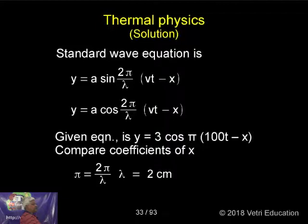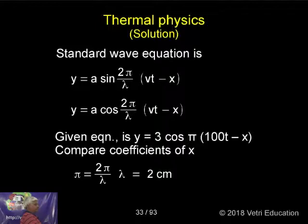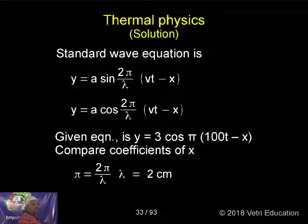So given the equation y equals this, compare the coefficient of x. The coefficient of x is simply 2 pi by lambda. Into lambda, we have pi here. Instead of that we substitute this value, everything cancels, giving us 2 centimeters.